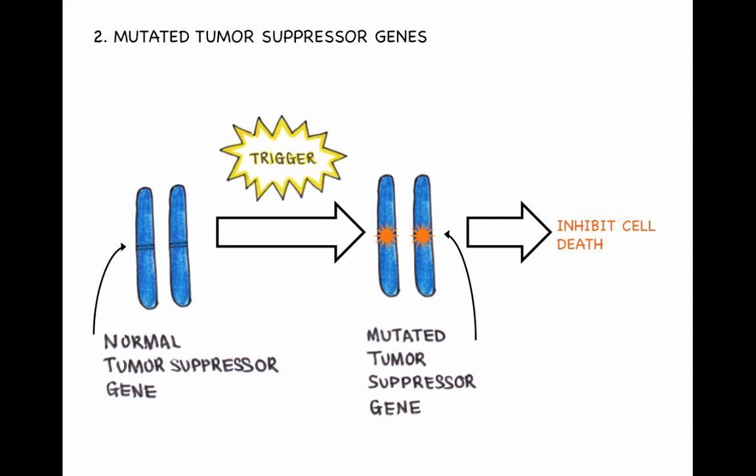Cells possessing the mutated tumour suppressor genes are not able to regulate cell growth, and so, cells with mistakes survive. In contrast to oncogenes, both alleles must be mutated for cancer to develop.